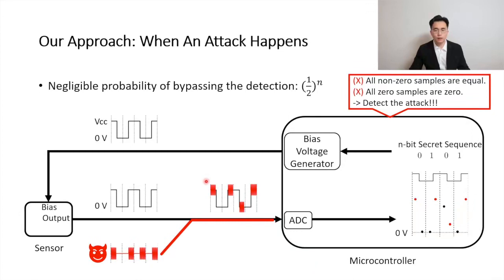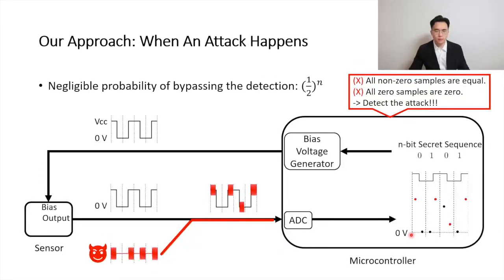When an attack happens, for example in the first, second, and fourth clock cycle, the attacker makes correct guesses and she changes the sensor output when the sensor is on. After digitization, we can find non-zero samples are unequal, and this implies an attack. Also, in the third clock cycle, the attack changes the zero sample, but all zero samples should be zero, and thus the attack is detected. We can find that in each clock cycle, the probability of a correct guess is 50%, as there are only two voltage transition directions in each clock cycle. Given n clock cycles, the probability of a correct guess is 1 over 2 to the power of n, which is negligible. In other words, the probability of dodging the detection is negligible.